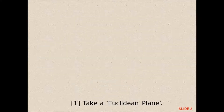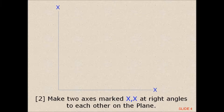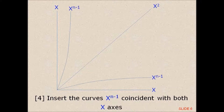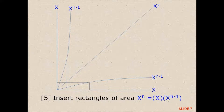Take a Euclidean plane. Make two axes marked XX at right angles to each other on the plane. Insert the bisector of the right angle and identify as X squared. Insert the curves X to the power n minus 1 coincident with both X axes. Insert rectangles of area X to the power n equals X times X to the power n minus 1.